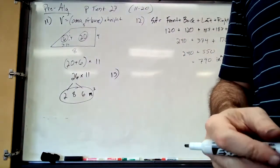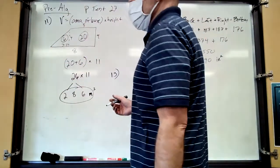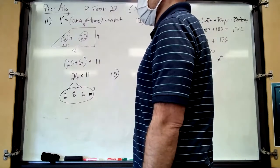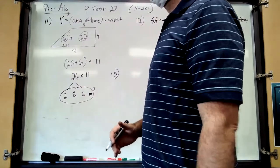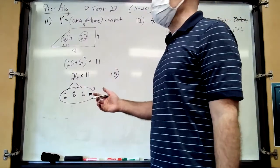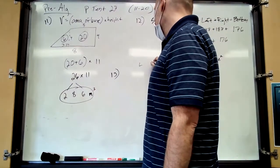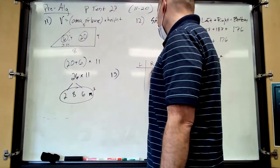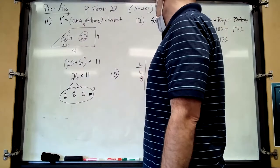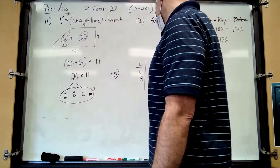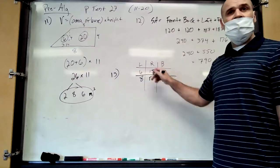Number 13: find r and s. These are similar triangles, which means you can use proportions. To organize it, make a little chart with columns for left, right, and bottom. The first triangle has values 6, 15, 12, and the second has 8, r, and s.